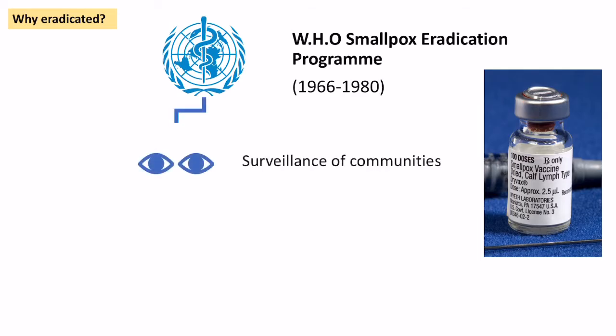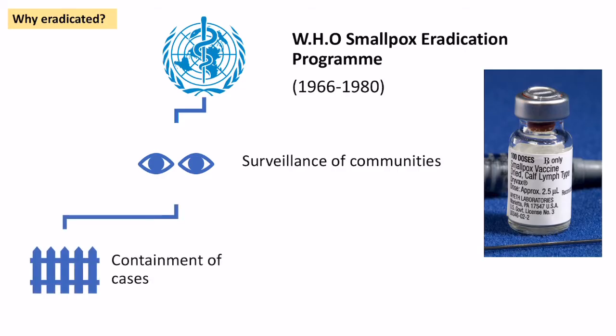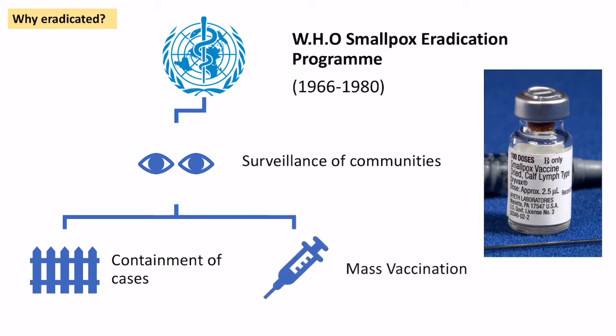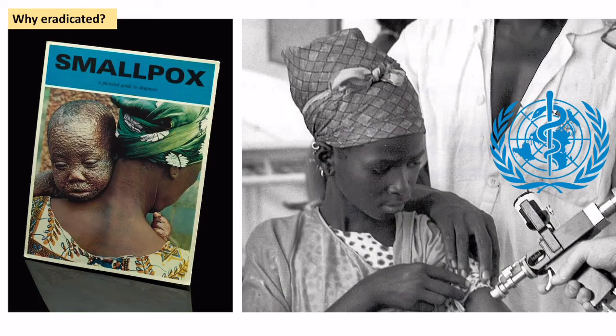The way they did this was through surveillance of communities — identifying where smallpox cases were occurring — and then doing two things: containing those cases, because the disease spreads through close physical contact and contagion, and then vaccinating these groups in large numbers. This is what we call ring vaccination, and it was the fundamental reason why the disease was eradicated.